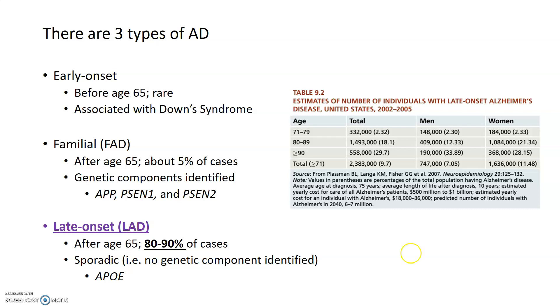There is an early onset type of Alzheimer's disease, which occurs before the age of 65. This early onset Alzheimer's is relatively rare and is usually associated with individuals who have Down syndrome.